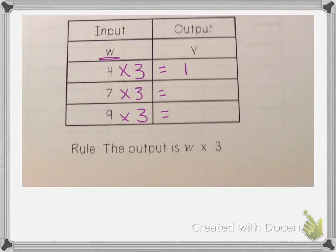So four times three is twelve. Seven times three is twenty-one. And nine times three is twenty-seven. So I've filled in that table using the rule.